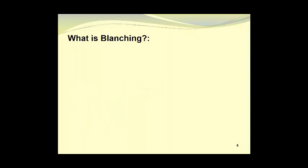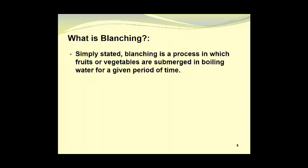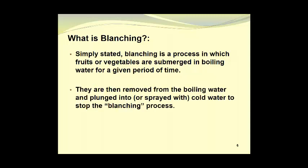So just what is blanching? Simply stated, blanching is a process in which fruits or vegetables are submerged in boiling water for a given period of time. They are then removed from the boiling water and plunged into or sprayed with cold water to stop the blanching process.